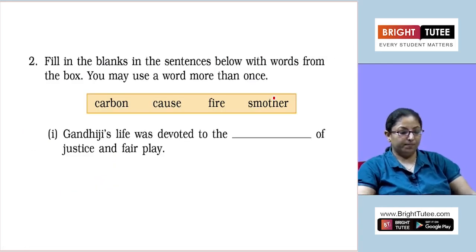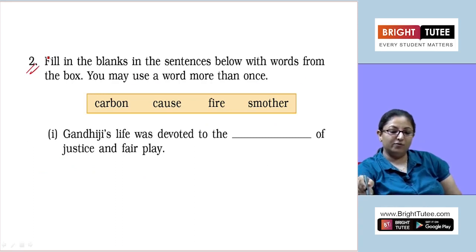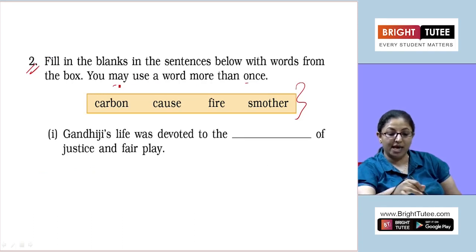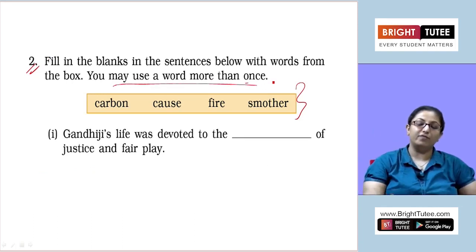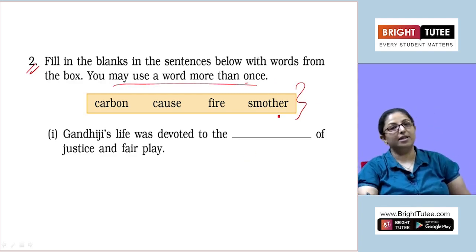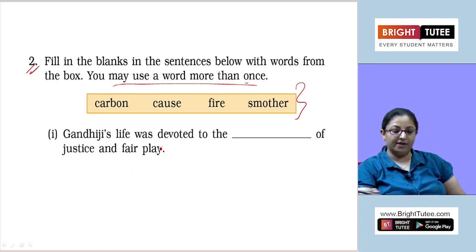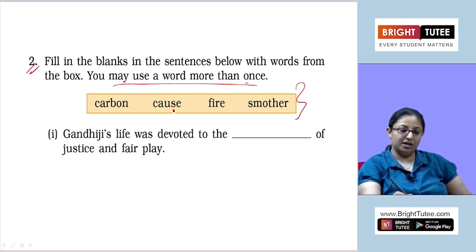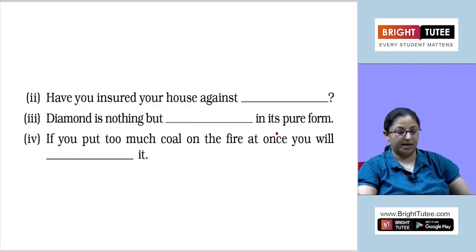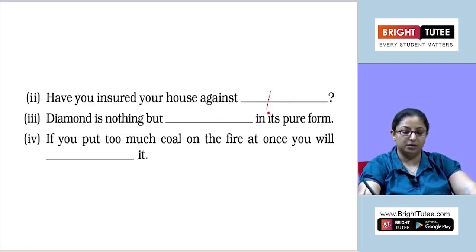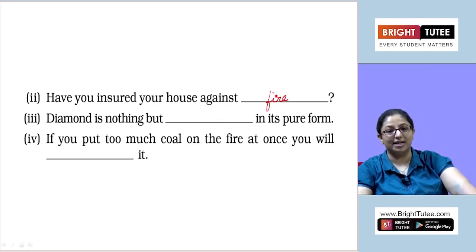Question number two: fill in the blanks with words from the box. You may use a word more than once. First: Gandhiji's life was devoted to the ___ of justice and fair play. The answer is 'cause' — Gandhiji's life was devoted to the cause of justice and fair play. Second: Have you insured your house against ___? Against fire.